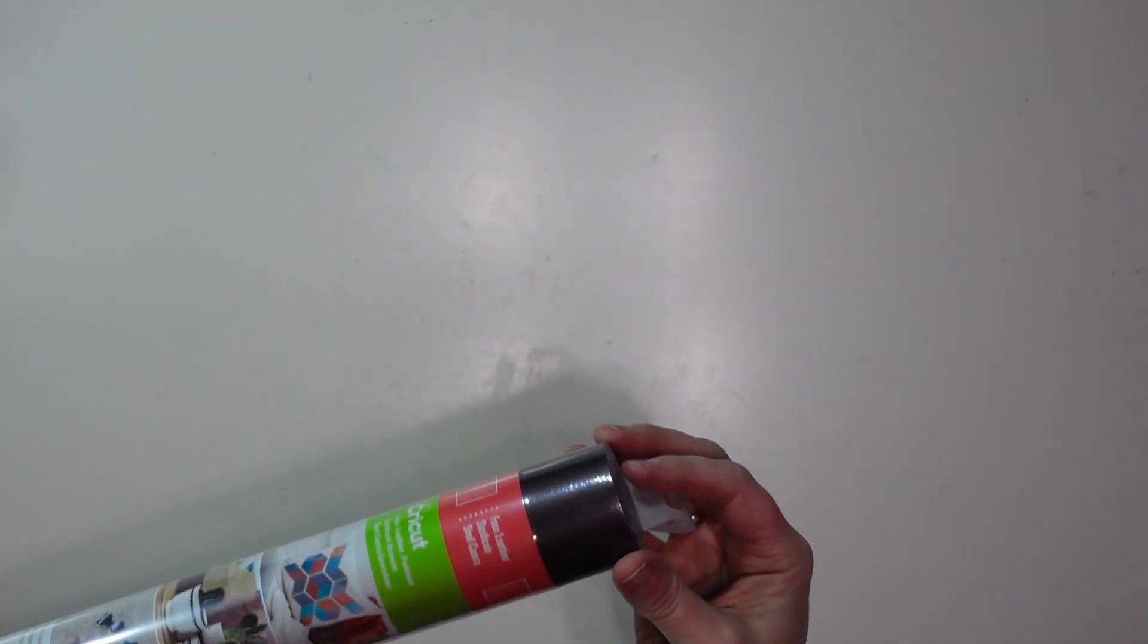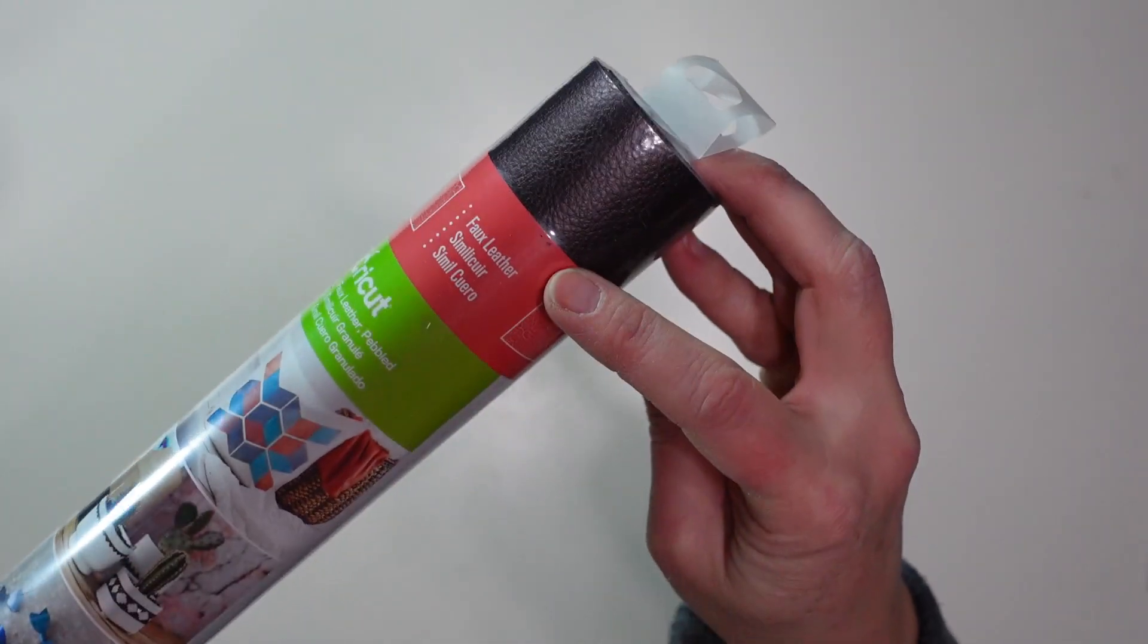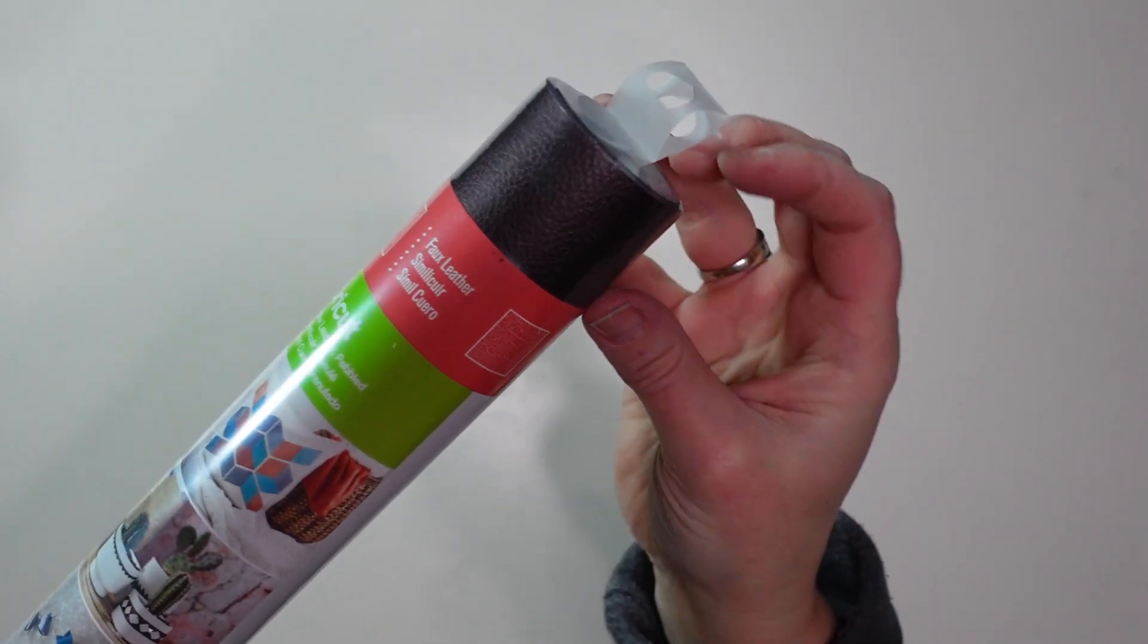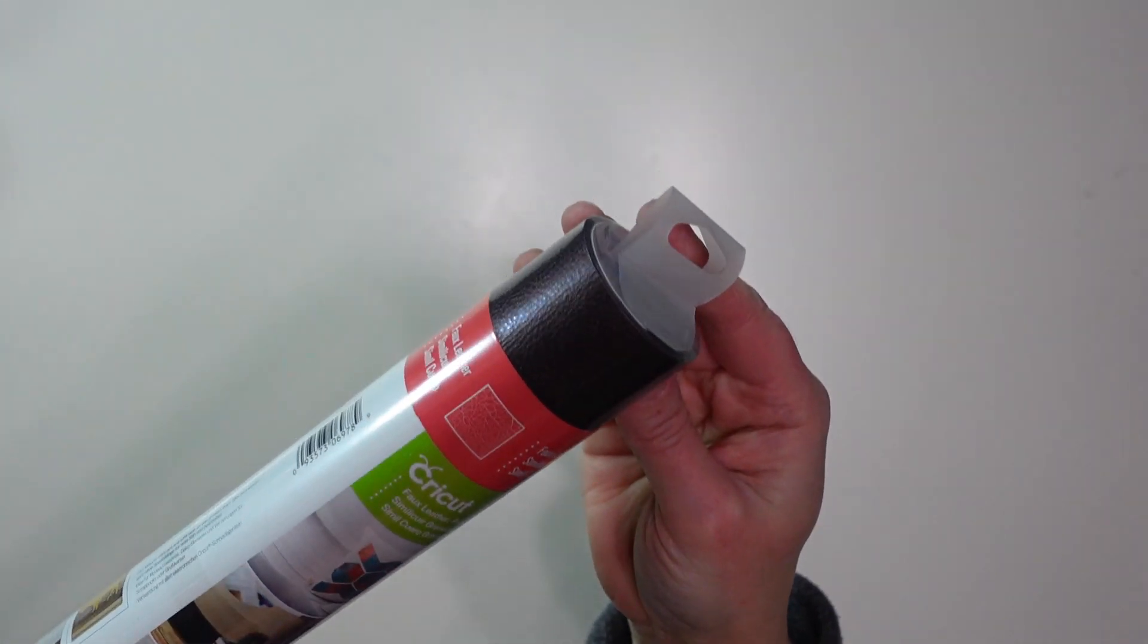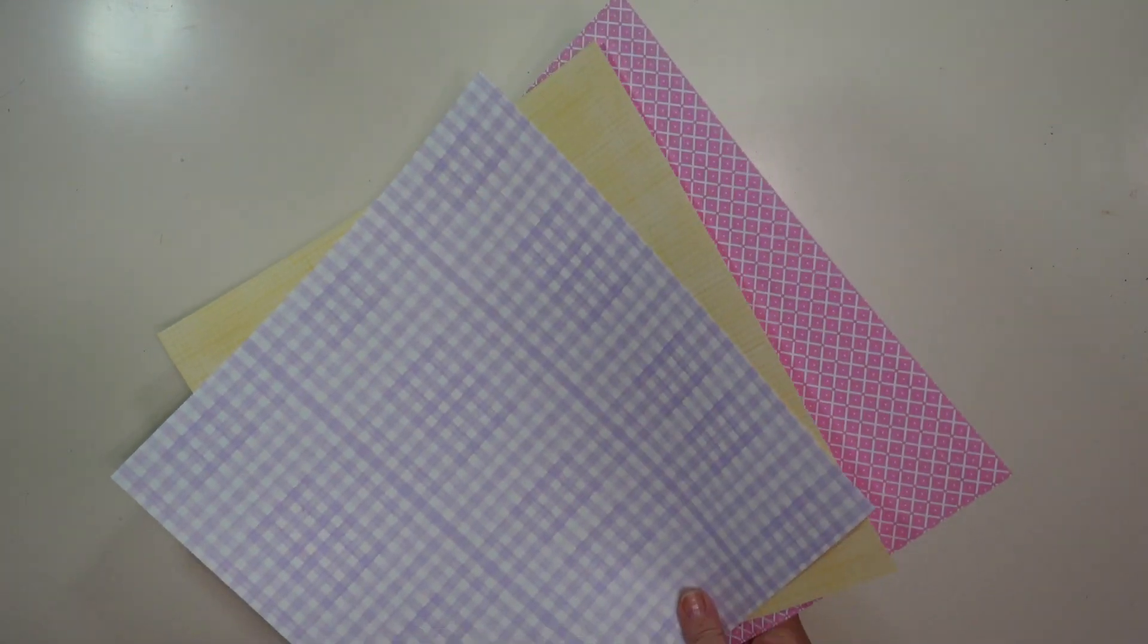And I am going to be using this faux leather material from Cricut. This looks just like leather, it is thinner but the Cricut machine cuts this out so nicely. And to add a little color to my jars I am going to be using some pastel patterned paper.